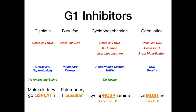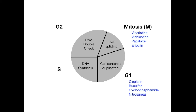To remember why these four agents are in G1: in G1, cellular contents get duplicated, and by cross-linking DNA, that duplication can't happen. So if you understand what G1 involves and know that these agents cross-link DNA, you'll have no problem placing them in G1. By cross-linking DNA, cellular contents won't be duplicated, and G1 won't proceed.